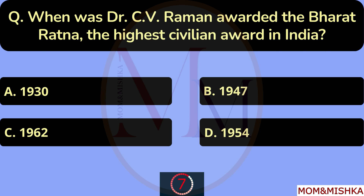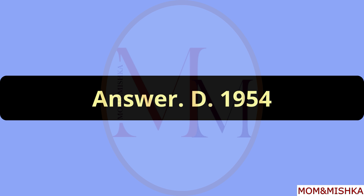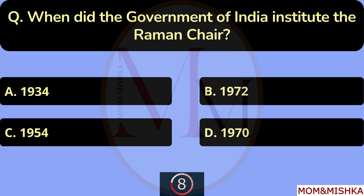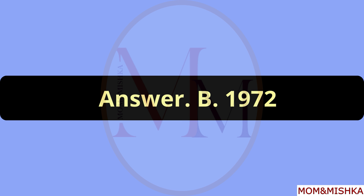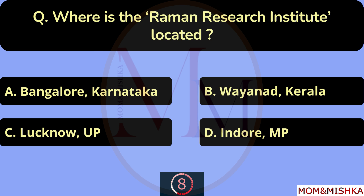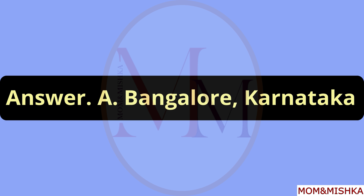When was Dr. C.V. Raman awarded the Bharat Ratna, the highest civilian award in India? In year 1954. Option D. When did the Government of India institute the Raman Chair? In year 1972. Option B. Where is the Raman Research Institute located? In Bangalore, Karnataka. Option A.